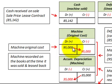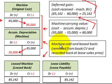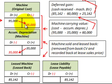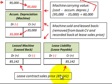The machine had an original cost of $95,000 as recorded on the books at the time it was sold and leased back, and accumulated depreciation on the machine was $35,000. To remove the machine from the books, we credit the machine for $95,000 and debit accumulated depreciation for $35,000. We then record the lease contract at its sales price of $85,140.